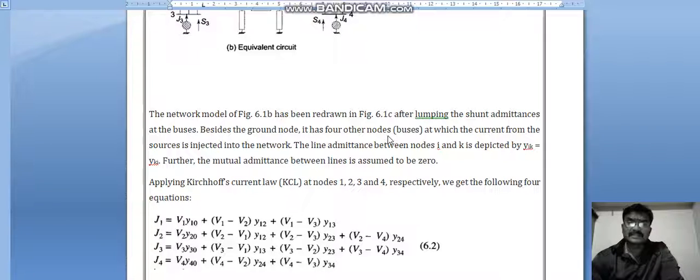It has four other nodes, buses at which the current from the sources is injected into the network. The line admittance between nodes i and k is depicted by yik equals yki. Further, the mutual admittance between lines is assumed to be zero.